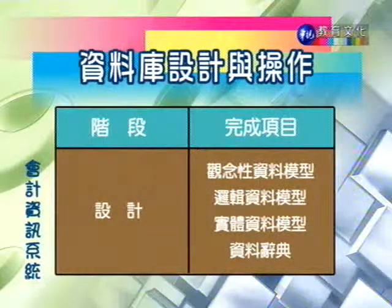设计阶段最主要是要确立资料库的观念模型。观念性的资料模型主要就是谈到整个企业在建构资料库时，资料表之间会有什么样的关系，要建构哪一些资料表才能够满足使用者的资讯需求。所谓的观念性架构基本上就是针对企业整个资料库的架构来做有效的连结。一般实务上会用ER图，也就是个体关系图，来描述不同的个体之间怎么样互相连结，这也是关联式资料库最大的特征。